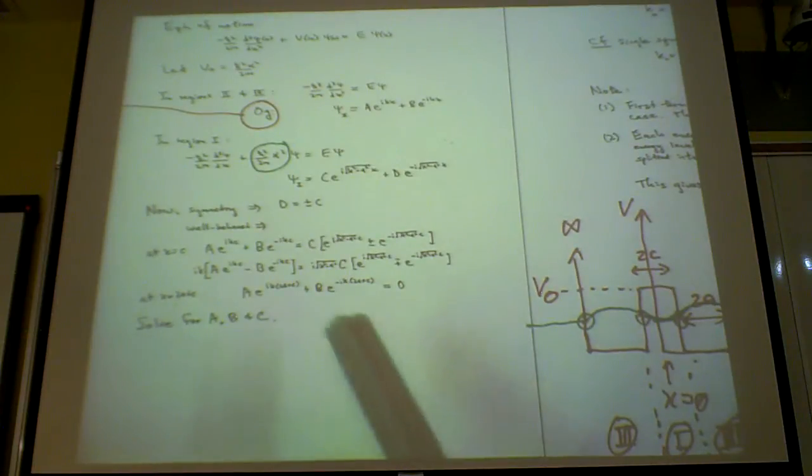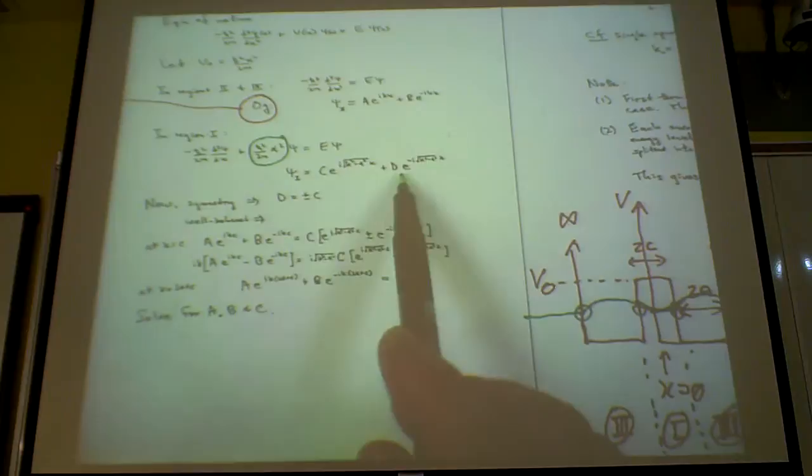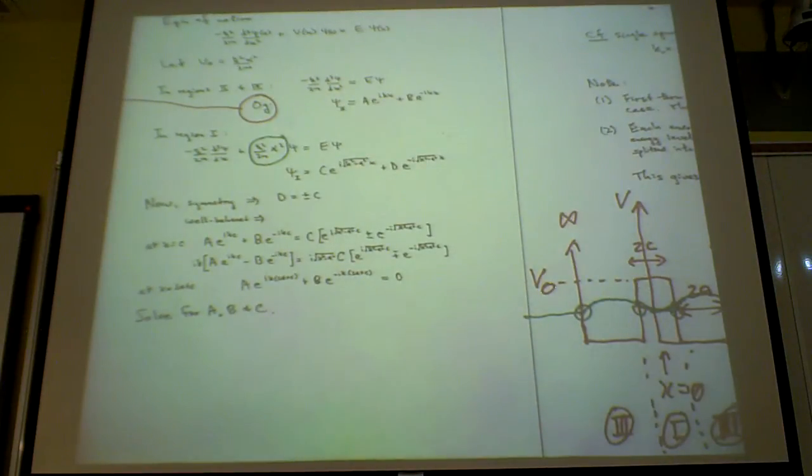Likewise, you can do the same for this boundary condition at x minus c, and then you have x equals c plus 2a, which is this boundary condition on the outside. This must equal zero on the other side.